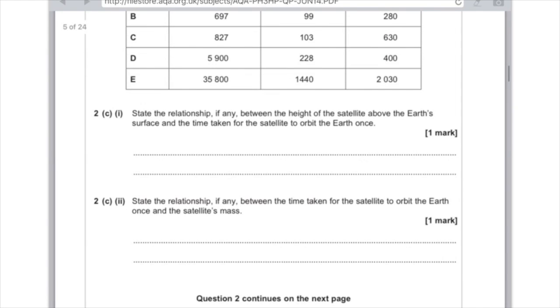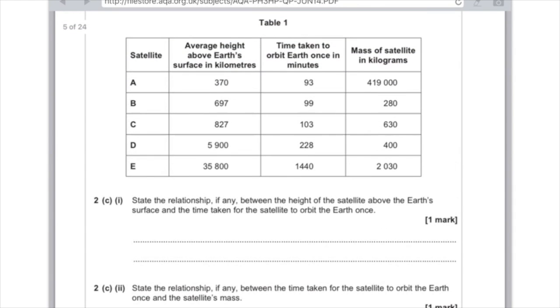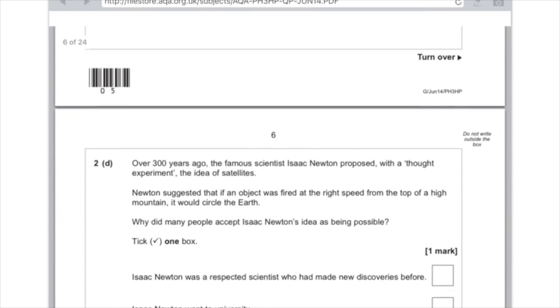2c part 2. State the relationship, if any, between the time taken for the satellite to orbit the Earth once and the satellite's mass. And if you look closely at the numbers, you can see that there's no relationship. So you write here, no relationship or no correlation.